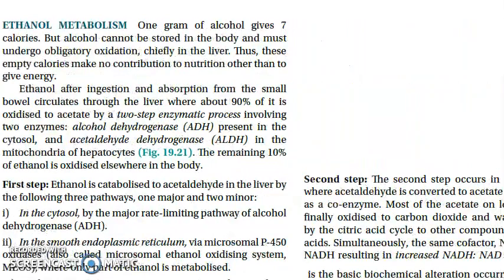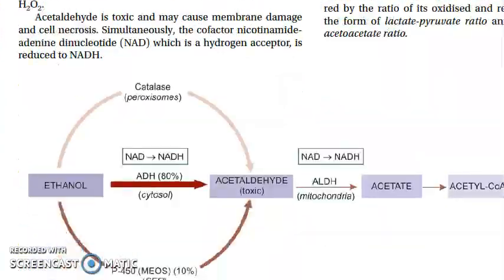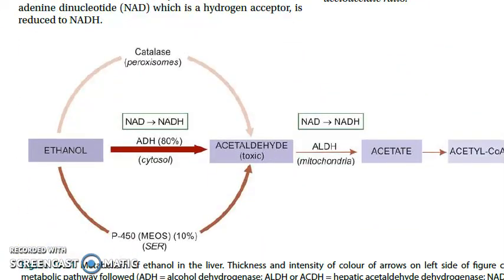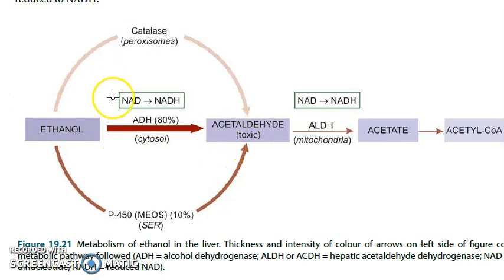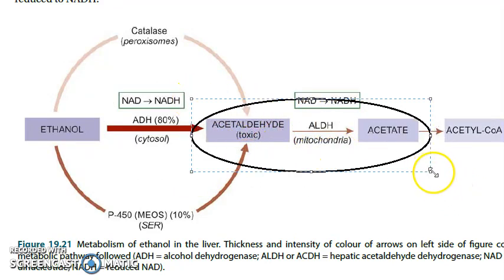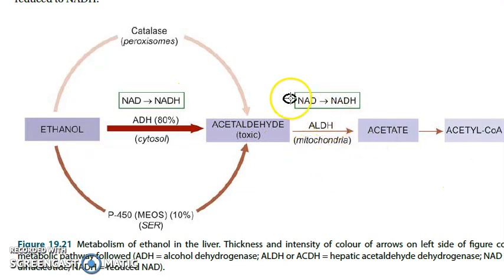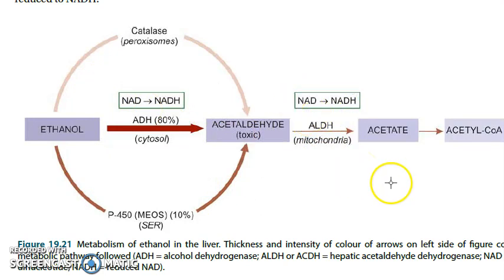The first thing they want us to know is ethanol metabolism. There is a nice diagram here. Ethanol — ethyl alcohol — alcohol dehydrogenase will convert it into aldehyde, that is acetaldehyde. Then acetaldehyde will become acetate via aldehyde dehydrogenase. So you have alcohol dehydrogenase and aldehyde dehydrogenase.